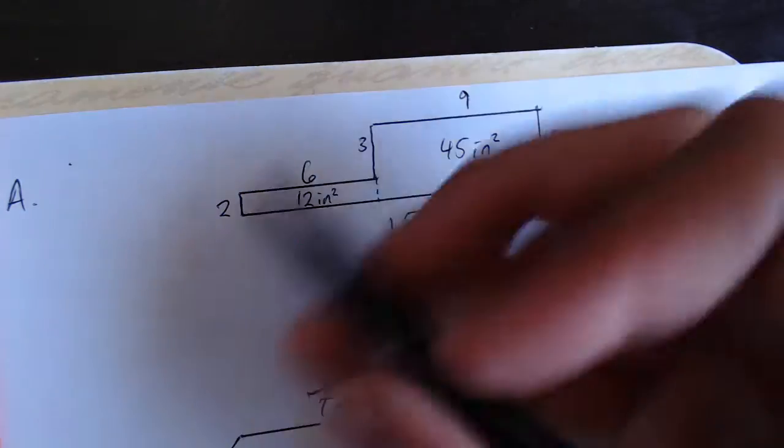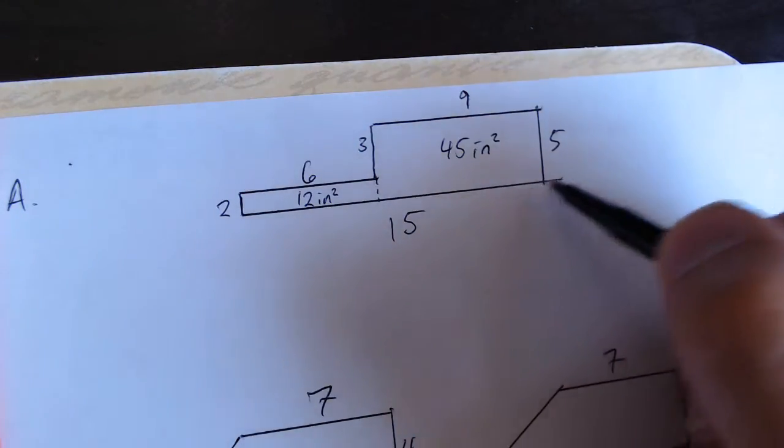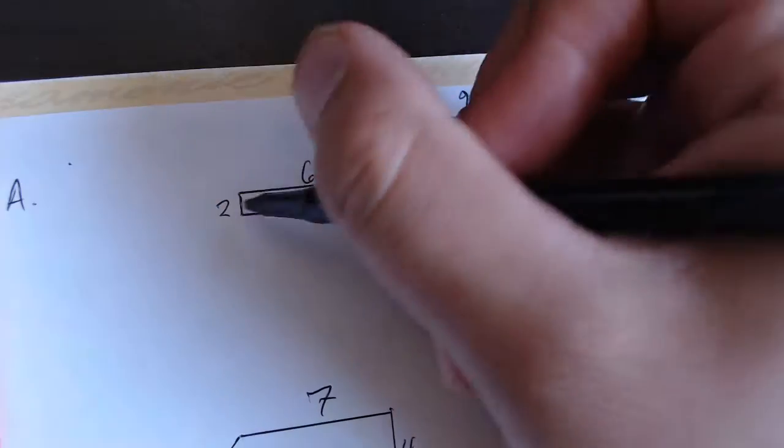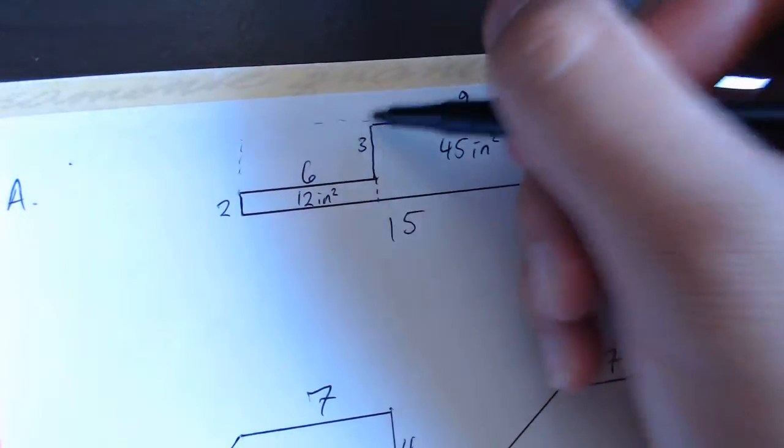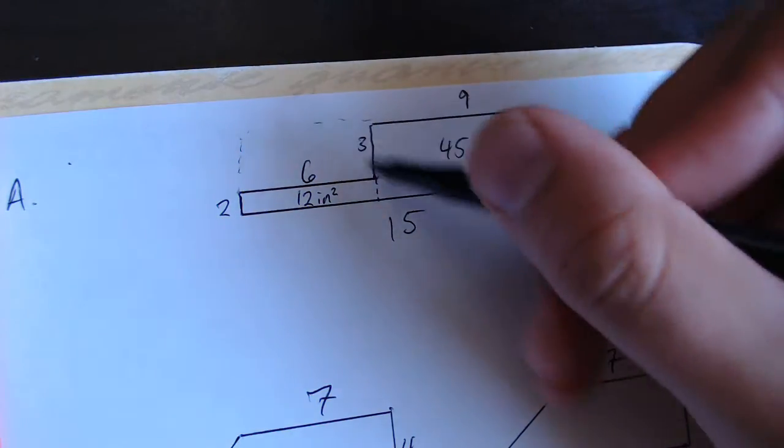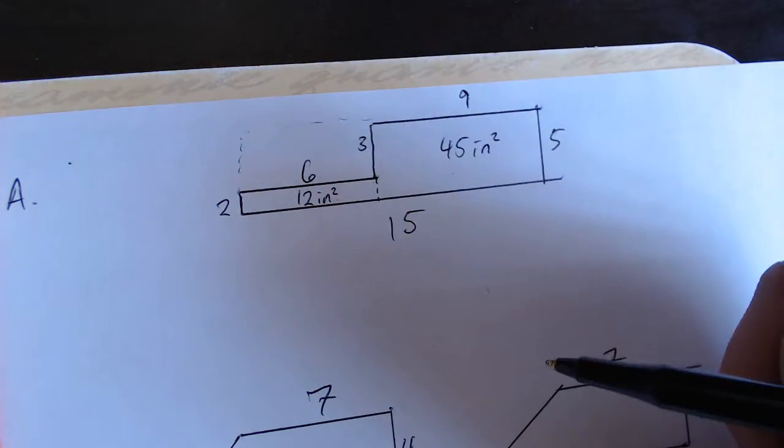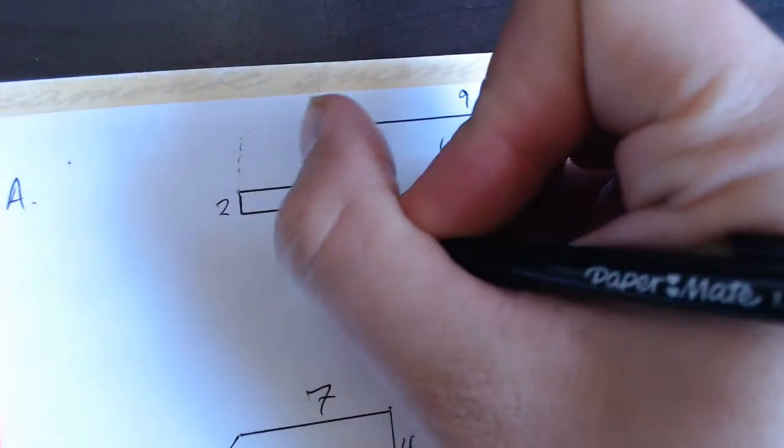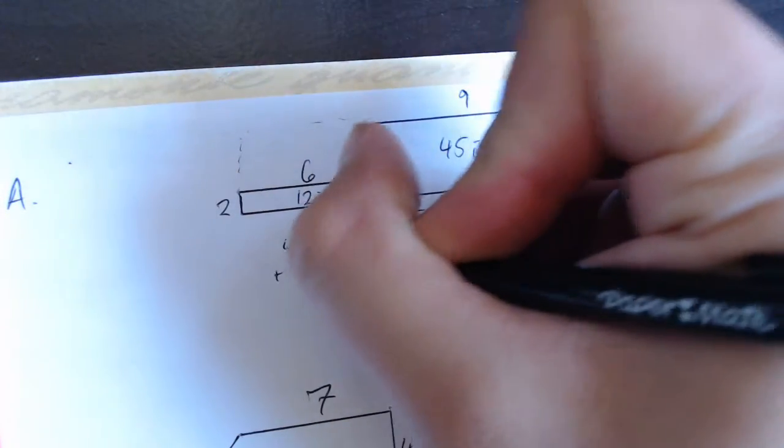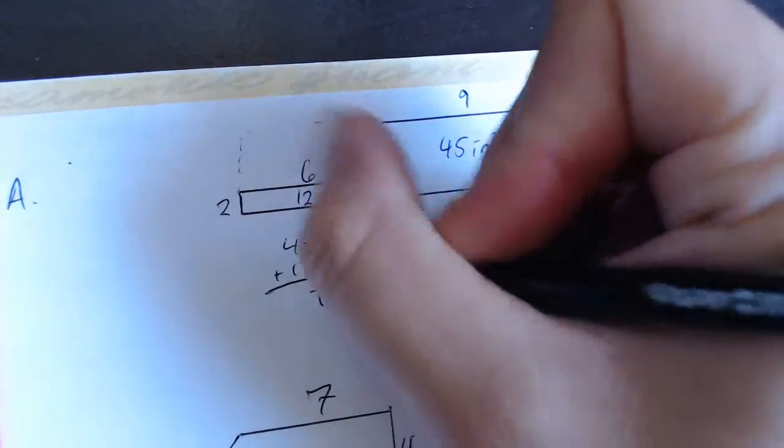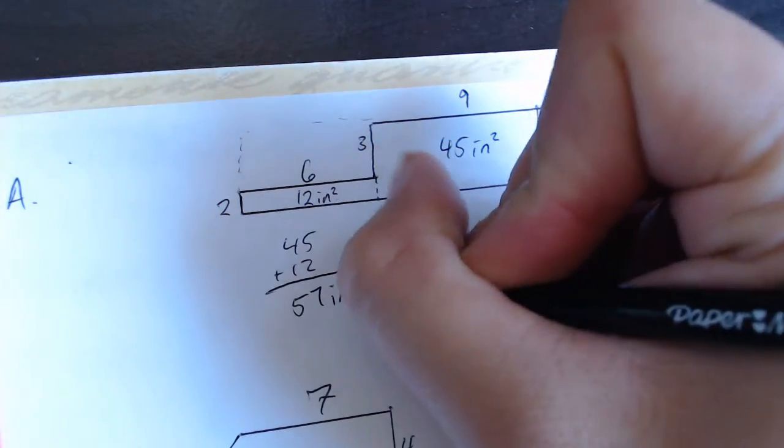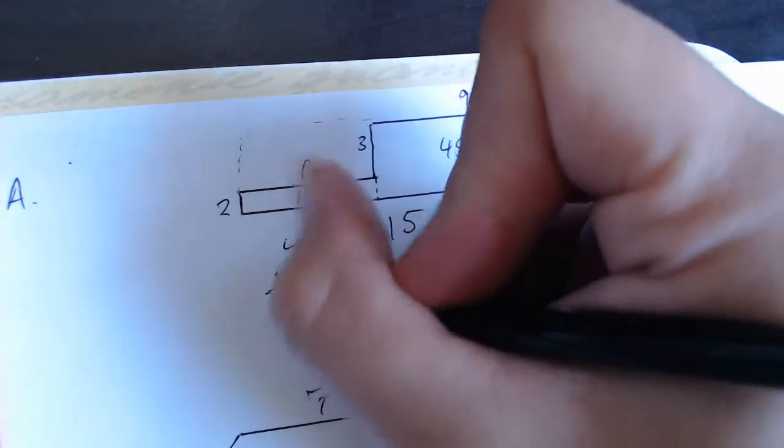Now we wouldn't use the length of 15 because that is the base of the long side. That would give us the area of a shape like this. That would not give us the area of this rectangle right here. So once we have found our two areas of the two separate shapes, we just go ahead and add those together. 45 plus 12 gives us 57 inches squared, and that is our final answer.